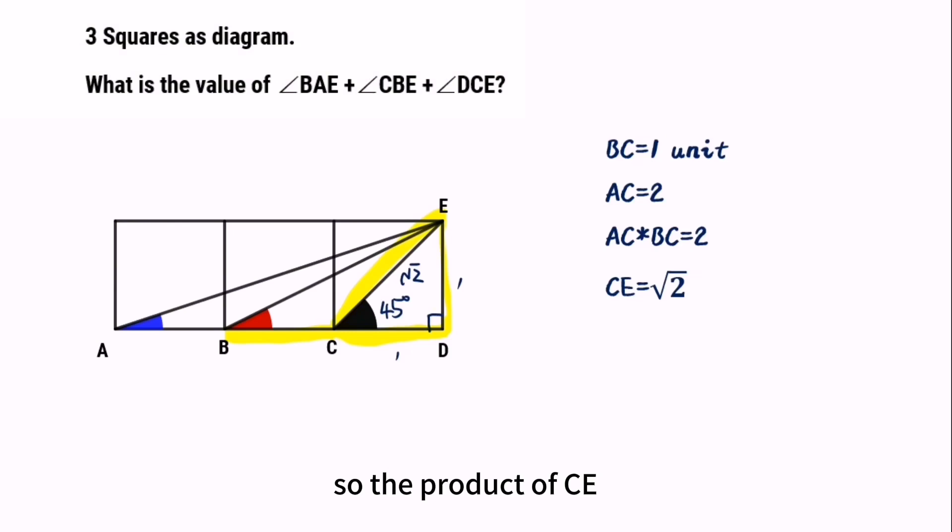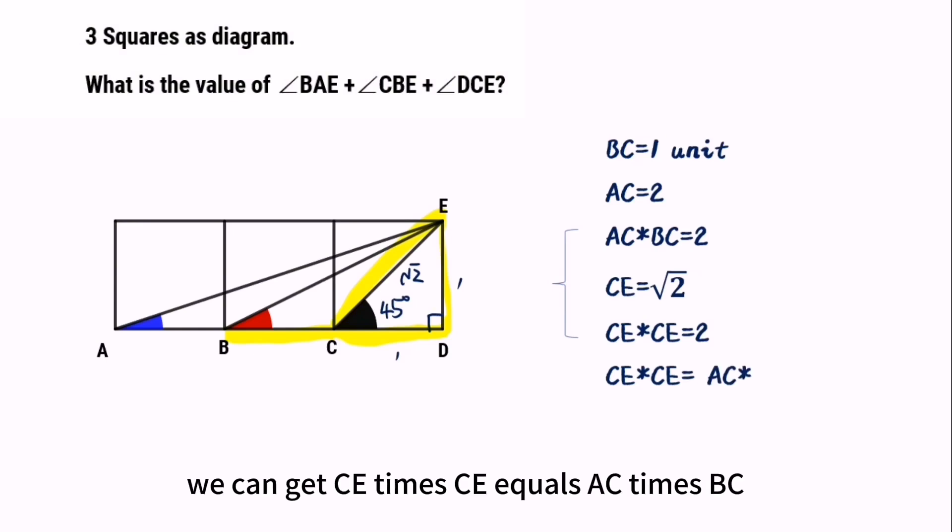So, the product of CE times CE is also equals two. According to these two equations, we can get CE times CE equals AC times BC.